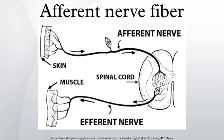In the nervous system there is a closed-loop system of sensation, decision, and reactions. This process is carried out through the activity of afferent neurons, interneurons, and efferent neurons.